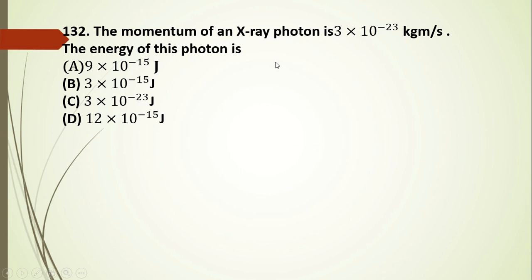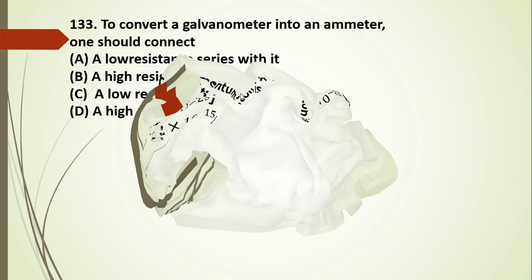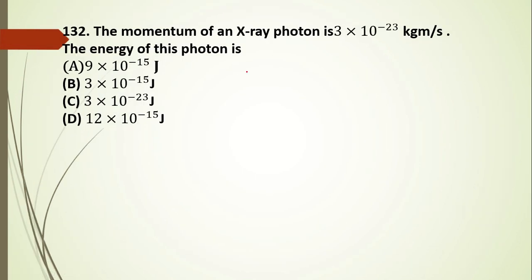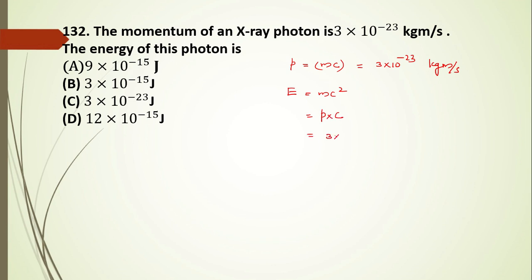Question 132: the momentum of an X-ray photon is given as P = 3 × 10⁻²³ kg·m/s. The energy of the photon is E = mc² = P × c. So energy equals 3 × 10⁻²³ multiplied by 3 × 10⁸, giving 9 × 10⁻¹⁵ joules. The answer to question 132 is A.